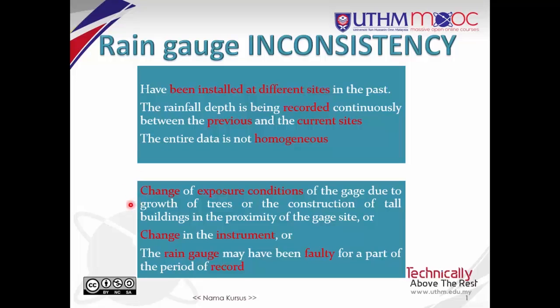Or the change of exposure conditions of the gauge due to growth of trees or the construction of tall buildings in the proximity of the gauge site, or change in the instrument, or the rain gauge may have been faulty for part of the period of record.